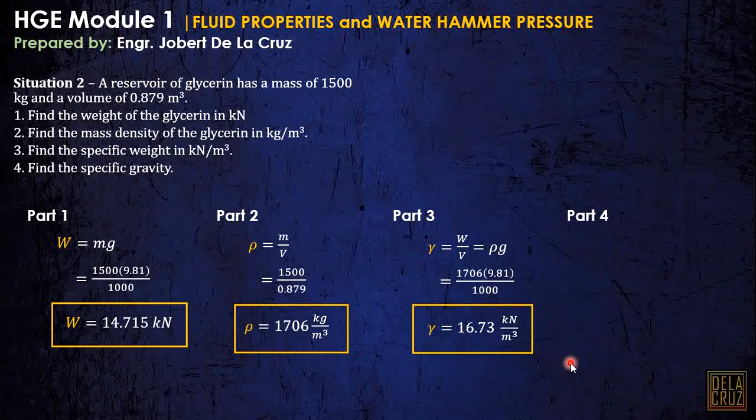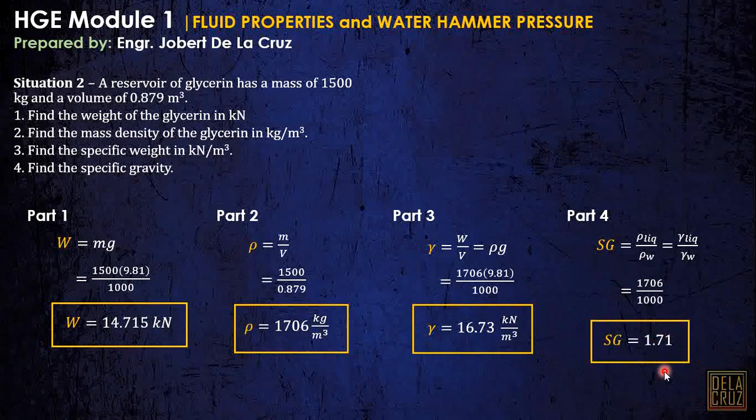For part 4, the specific gravity. Specific gravity, again, is rho of the liquid over the rho of the water. Or we can express this into gamma of the liquid over the gamma of water and substitute. And we have this value. That is a unitless or dimensionless parameter.